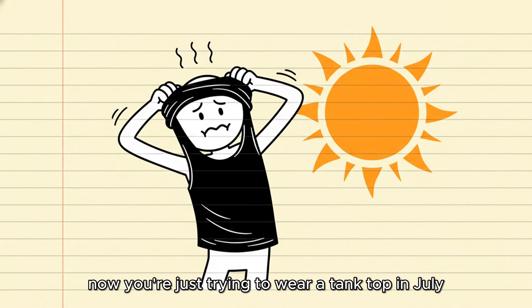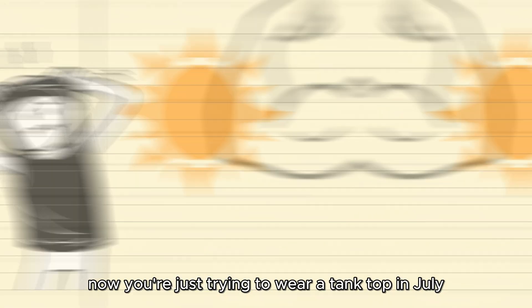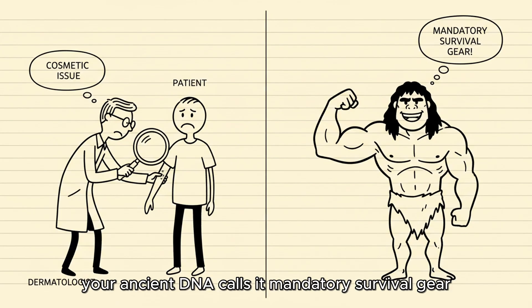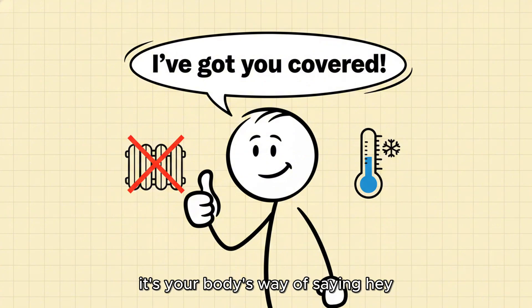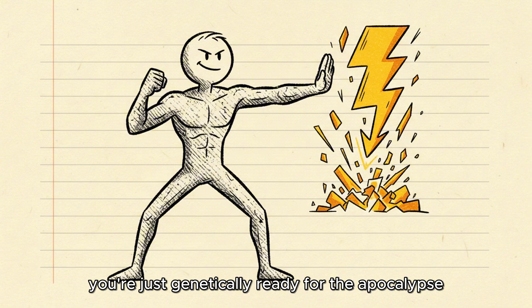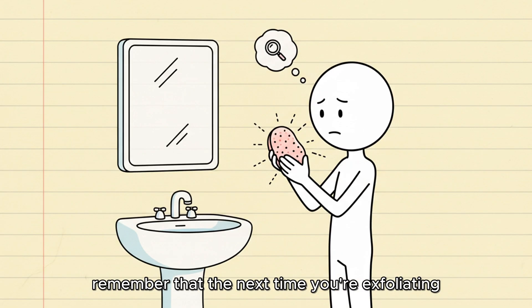Think about it. In a world where keeping warm meant life or death, having this thickened, epidermal layer was a genuine survival advantage. Now, you're just trying to wear a tank top in July. Your modern dermatologists call it a cosmetic issue. Your ancient DNA calls it mandatory survival gear. It's your body's way of saying, Hey, just in case the heating goes out forever, I've got you covered. If you have this trait, embrace it. You're not dirty. You're just genetically ready for the apocalypse. Remember that the next time you're exfoliating.